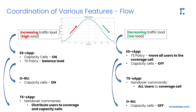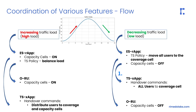Let's consider two cases of traffic load change. When traffic load is decreasing, the energy saving RAP takes a two-step action. Firstly, it creates a policy for the traffic steering XApp to move all users from capacity cells to coverage cells.